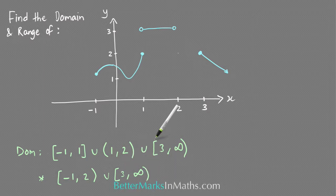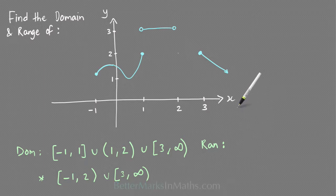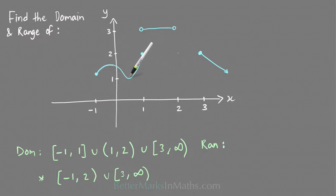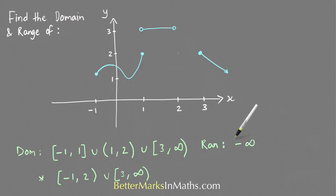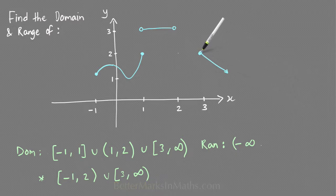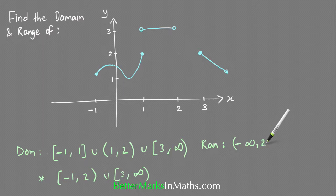To figure out the range, all you have to do is look at the y values that belong to the graph. Starting at the lowest y value is always a good idea. Looking at the part of the graph that heads off towards negative infinity, this part goes down to minus infinity. So the lowest y value is going to be minus infinity. Heading up the other way, this part stops at y equals 2, which is included, so the range goes up to 2 inclusive.